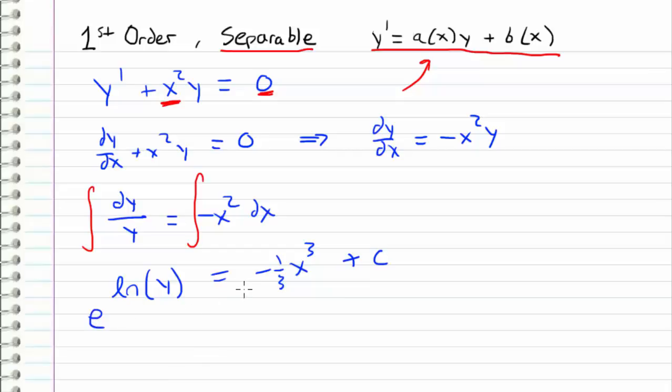So to finish solving this, we take the exponential of both sides. And what we're left with is y is equal to c e to the negative one-third x cubed.